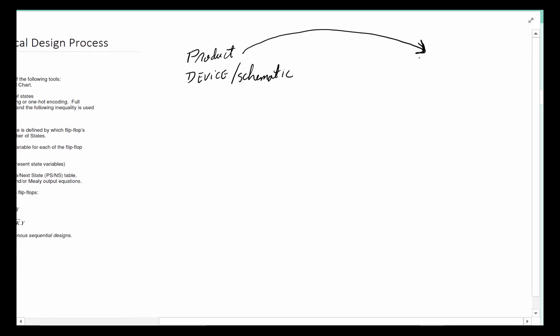Typically what we do for the functional description of a sequential machine, a finite state machine, is we do a state diagram.